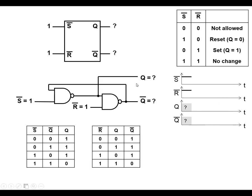Now we're going to look at what's inside this. The Active-Low Bistable can be made by using two NAND gates. The output of the first one goes into the input of the second one, and the output of the second one goes into the input of the first one.